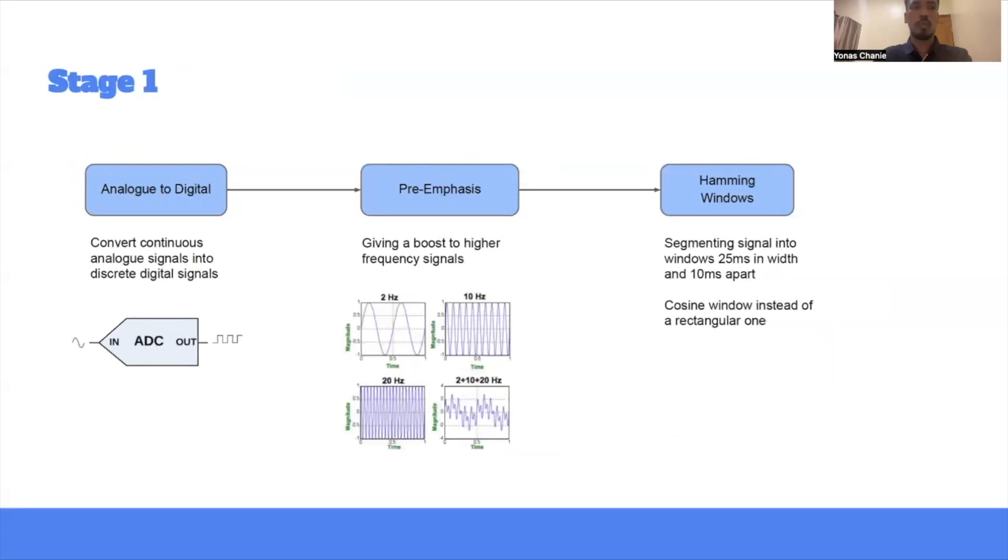So the first stage is basically a preprocessing step before extracting the coefficients. And it involves first taking the continuous analog signal into discrete digital signal. And this is the basic step. And then once we get the digital signal, we apply what's called pre-emphasis in order to boost the energy of high frequency signals. And in the end, this will allow us to improve the signal to noise ratio because once we boost the energy of high frequency signals, we can see the overall picture. And the third one is framing and windows. In this stage, we segment the signal into a fixed window size. For example, in this case, 25 millisecond with 10 millisecond apart. So this is the first stage.